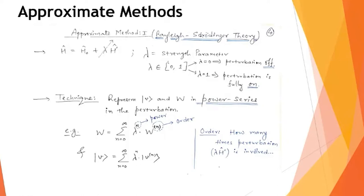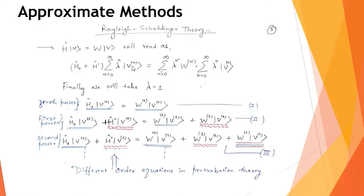The total Hamiltonian H can be written as H₀ plus H′, where H₀ is the unperturbed part and H′ is the perturbation. We then write series expansions for the energy eigenvalue W and the energy eigenstate ψ in powers of a strength parameter λ. λ ranges between zero and one, indicating how much perturbation is included, and at the end we set λ equal to one.